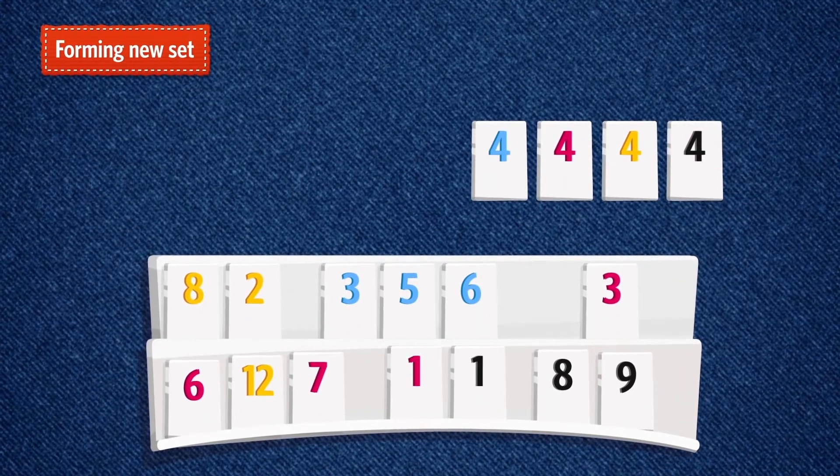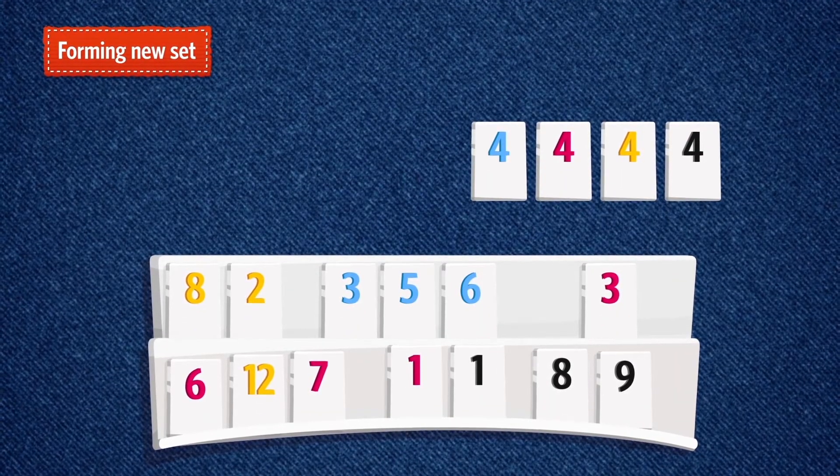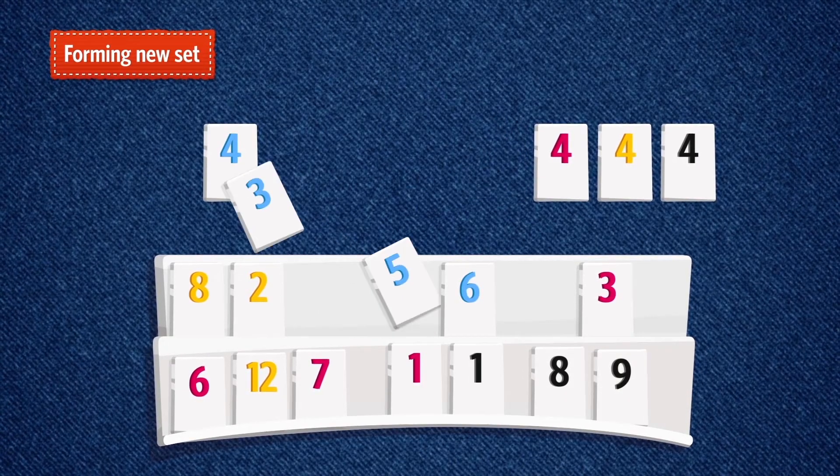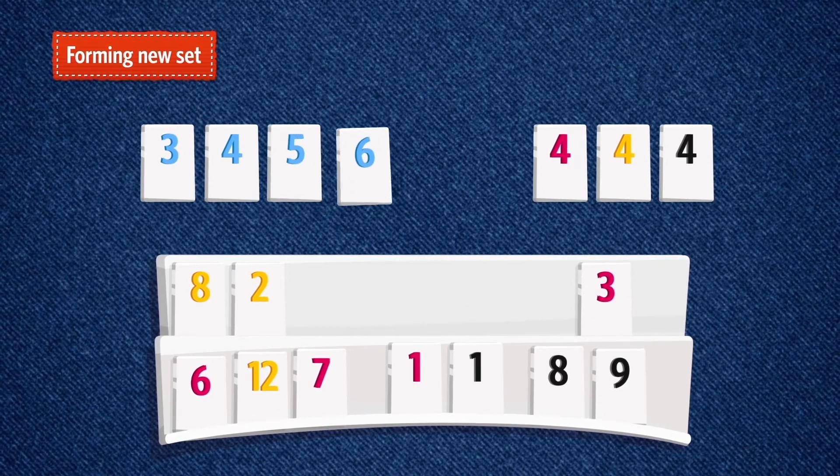Forming new sets. Grab the fourth tile from a group on a table to make a new set. Take the blue four from the group of fours and add it to the three, five and six from your rack to create a new set. Add and split.